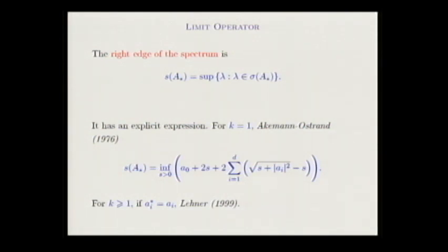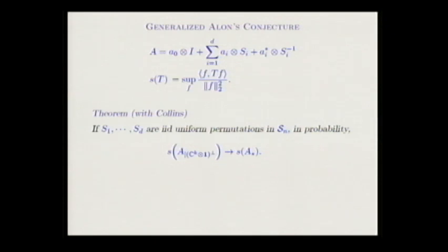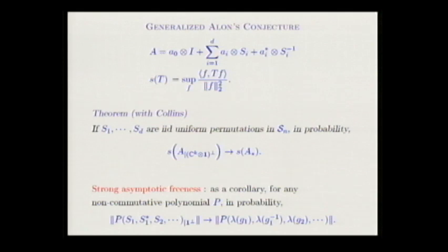The right edge of the support of the limit operator has been computed at least in the scalar case (k=1) by Akemann and Ostrand, and there is a book by Figà-Talamanca and Steger on anisotropic random walks on trees. Our theorem with Benoît Collins is that the largest non-trivial eigenvalue of the random matrix with independent permutation matrices converges to the right edge of the spectrum of the limit operator.